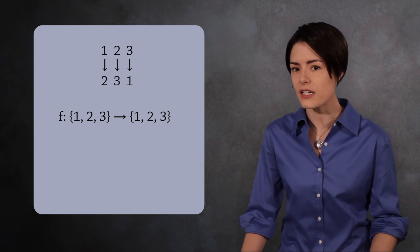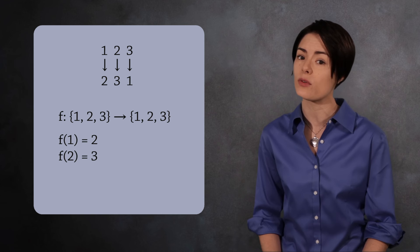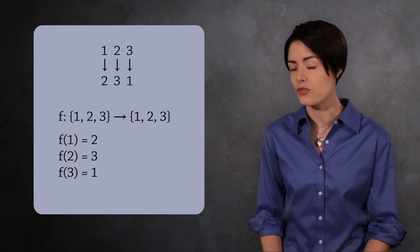When viewed this way, we see that a permutation acts like a function. More specifically, it is a bijection from the set 1 to 3 to itself with f of 1 equals 2, f of 2 equals 3, and f of 3 equals 1.